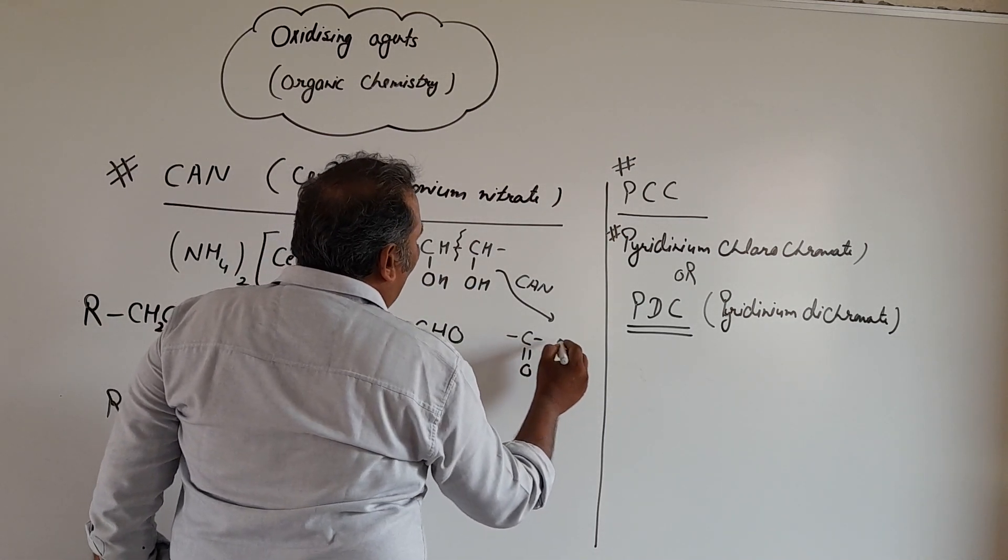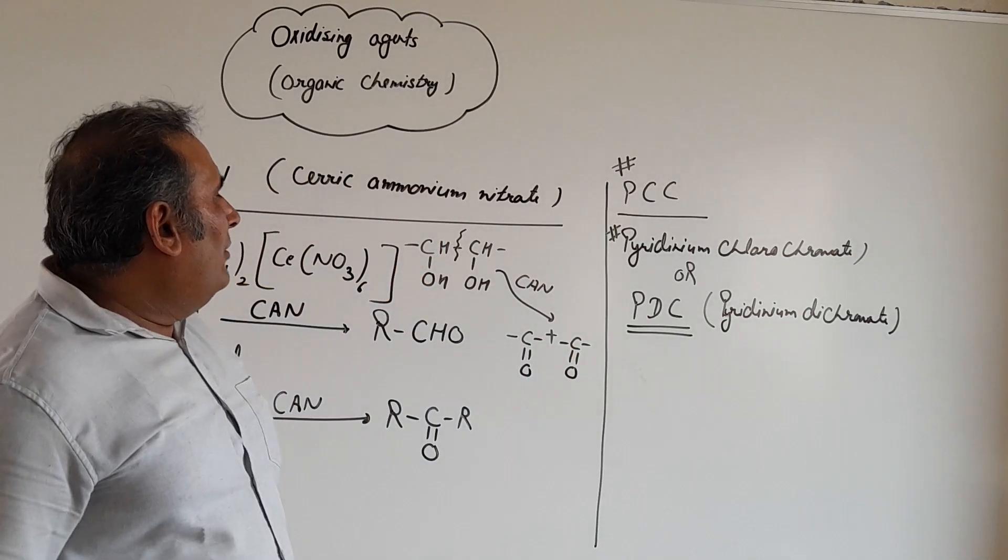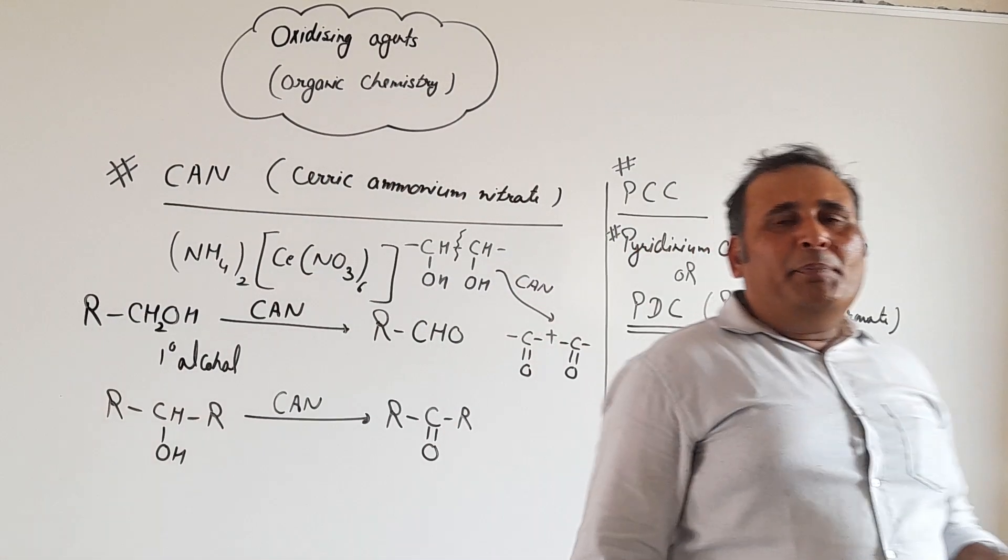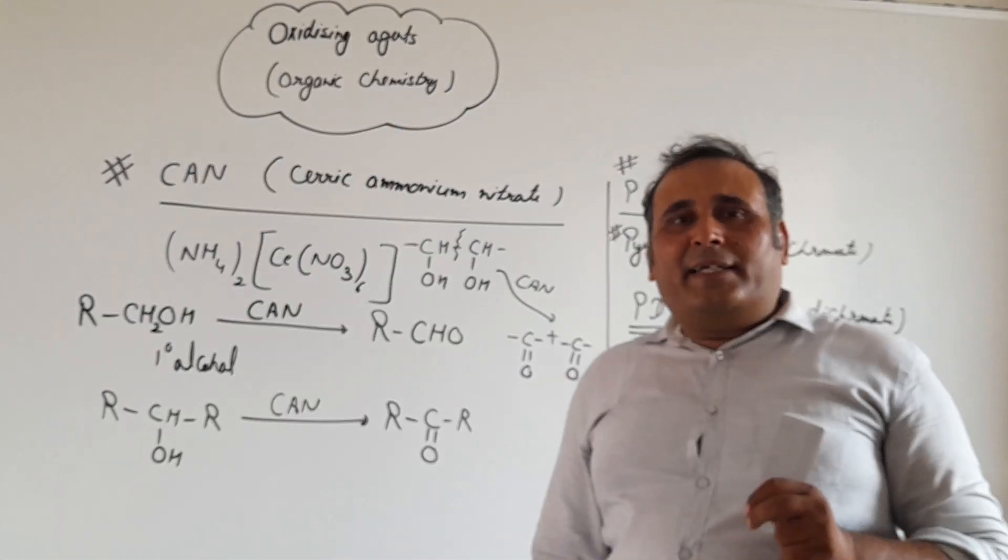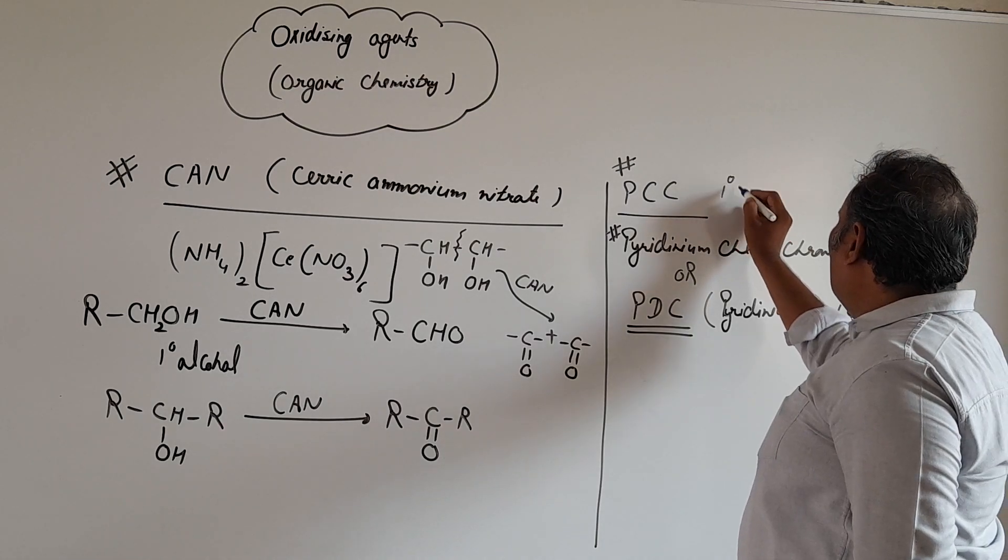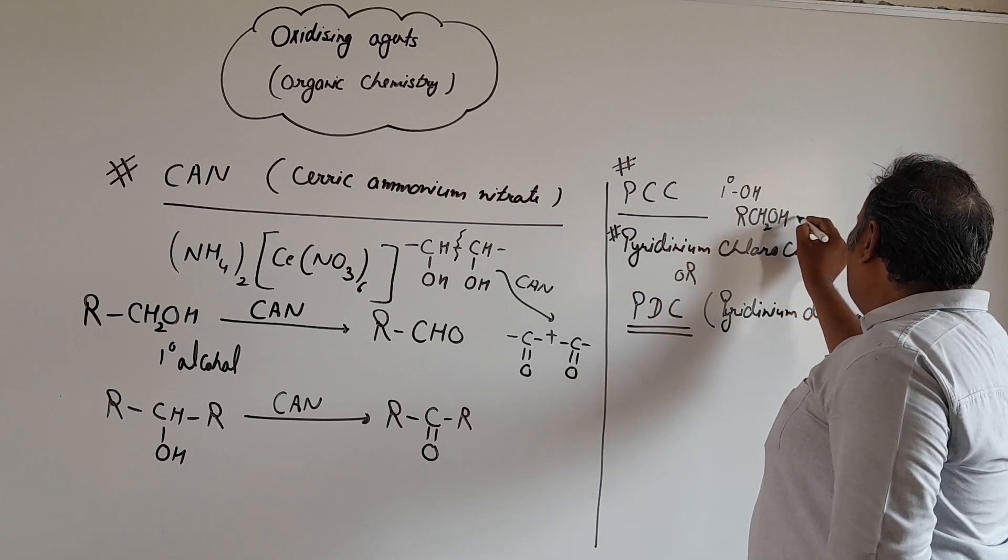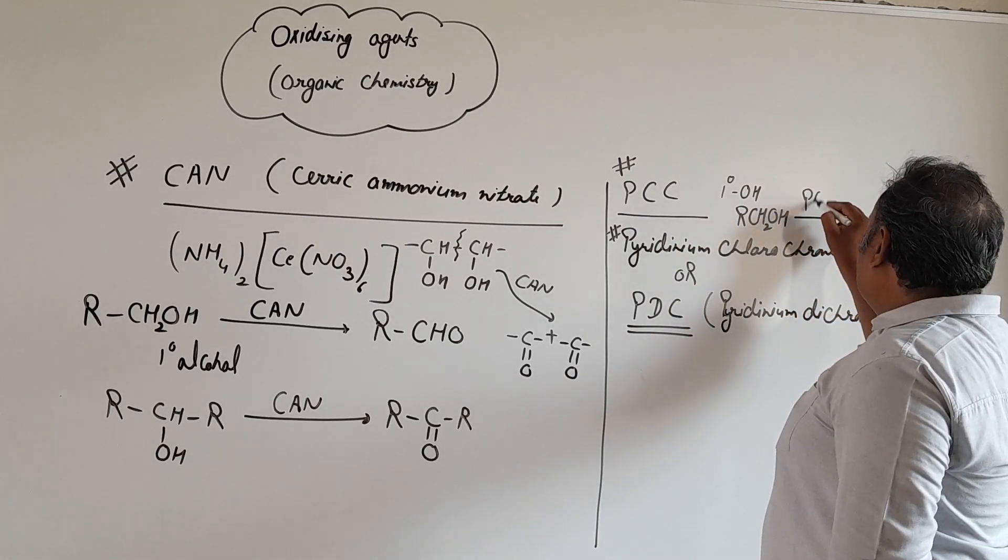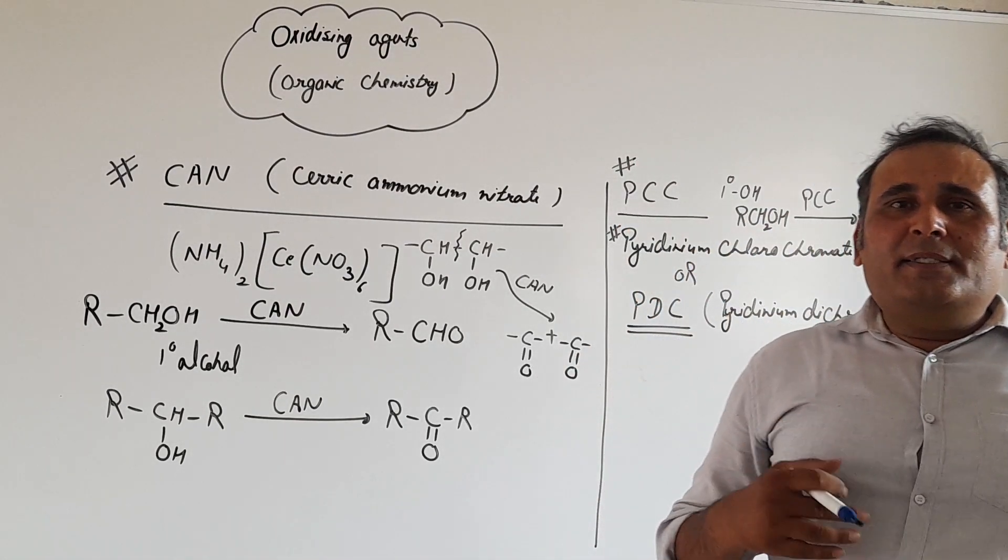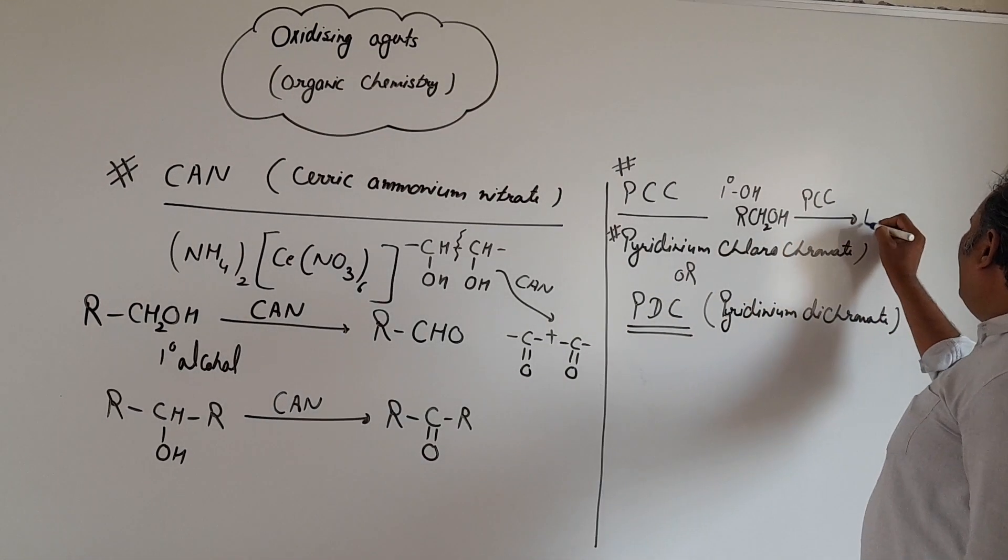So PCC and PDC, similarly PCC and PDC are also selective oxidizing agents. If we are taking 1 degree alcohol like RCH2OH, then 1 degree alcohol in the presence of PCC, pyridinium chlorochromate, or we can say PDC, pyridinium dichromate, gets converted into aldehyde.